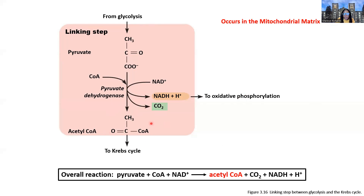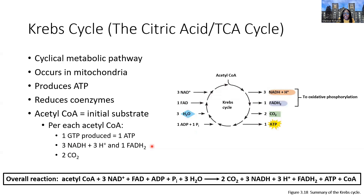We take acetyl-CoA, the product of the linking step, and shuttle it to the next stage: the Krebs cycle. There we continue to generate more electrons as well as a smaller amount of ATP. The Krebs cycle — also called the citric acid cycle or TCA cycle — is a cyclical series of metabolic pathways, a cyclical set of enzymatic reactions similar to glycolysis, where the major substrate regenerates cyclically.